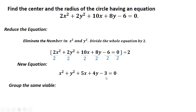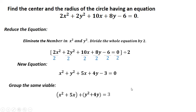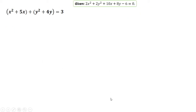After reducing the equation, you group according to variable — group all x terms and group all y terms. The negative 3 is transposed to the right side, so it becomes positive 3. Now we can do completing the square using this equation.